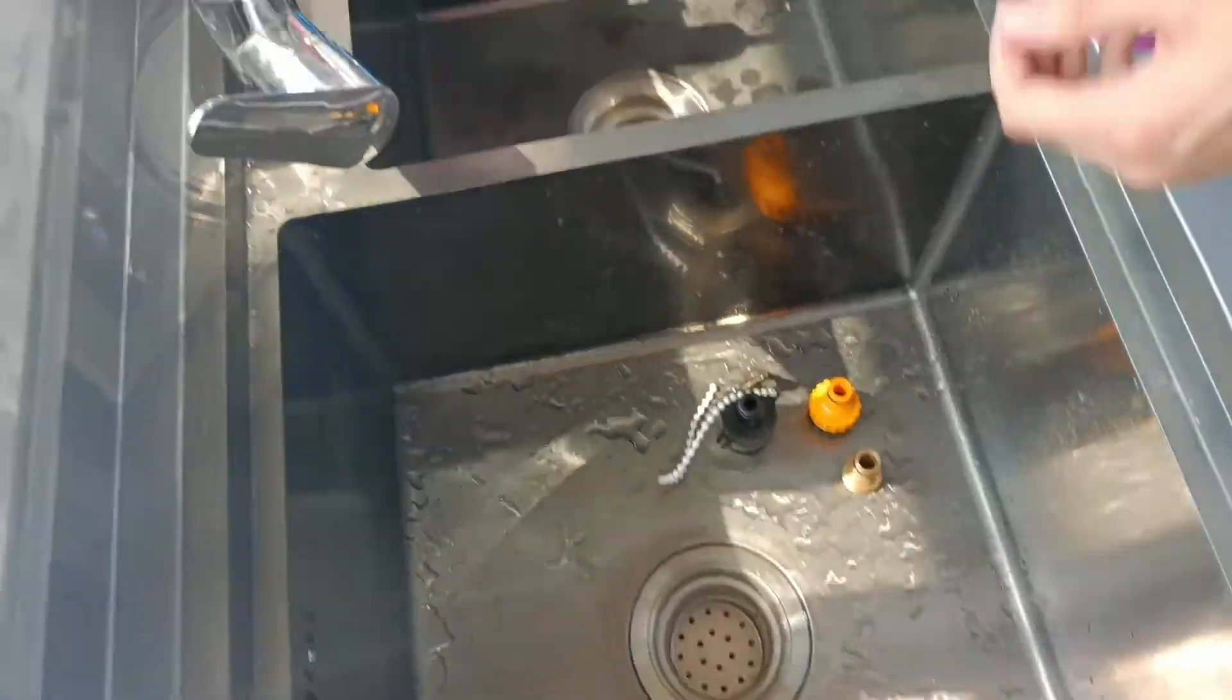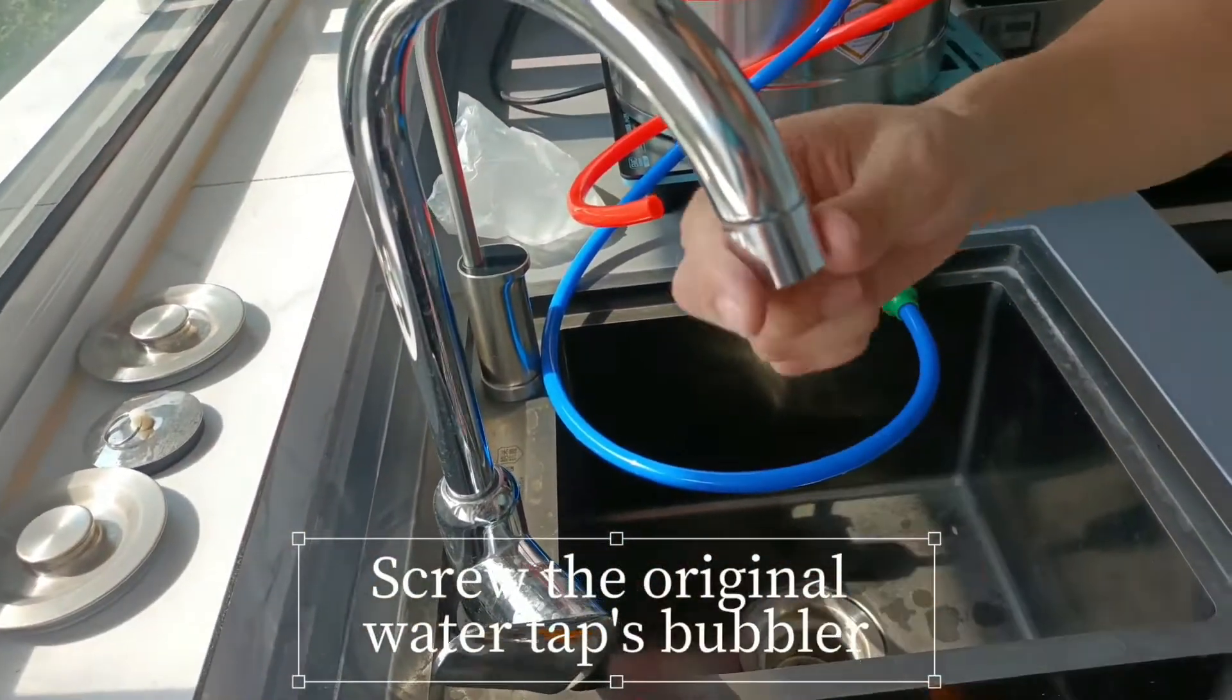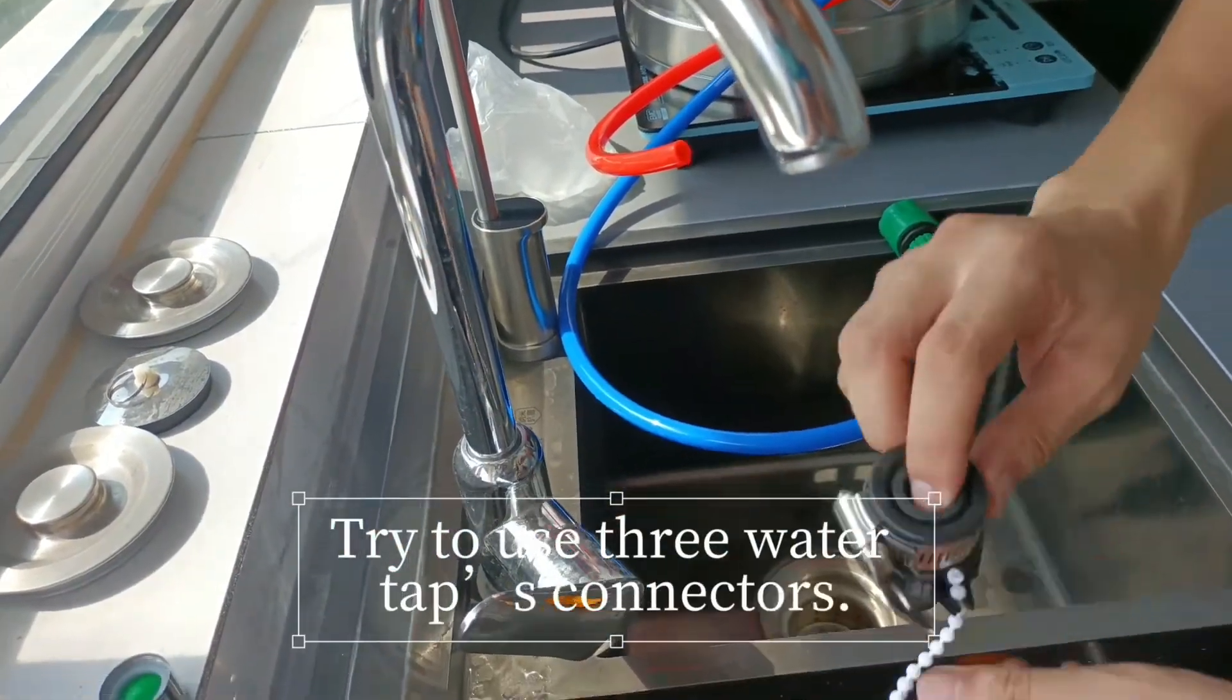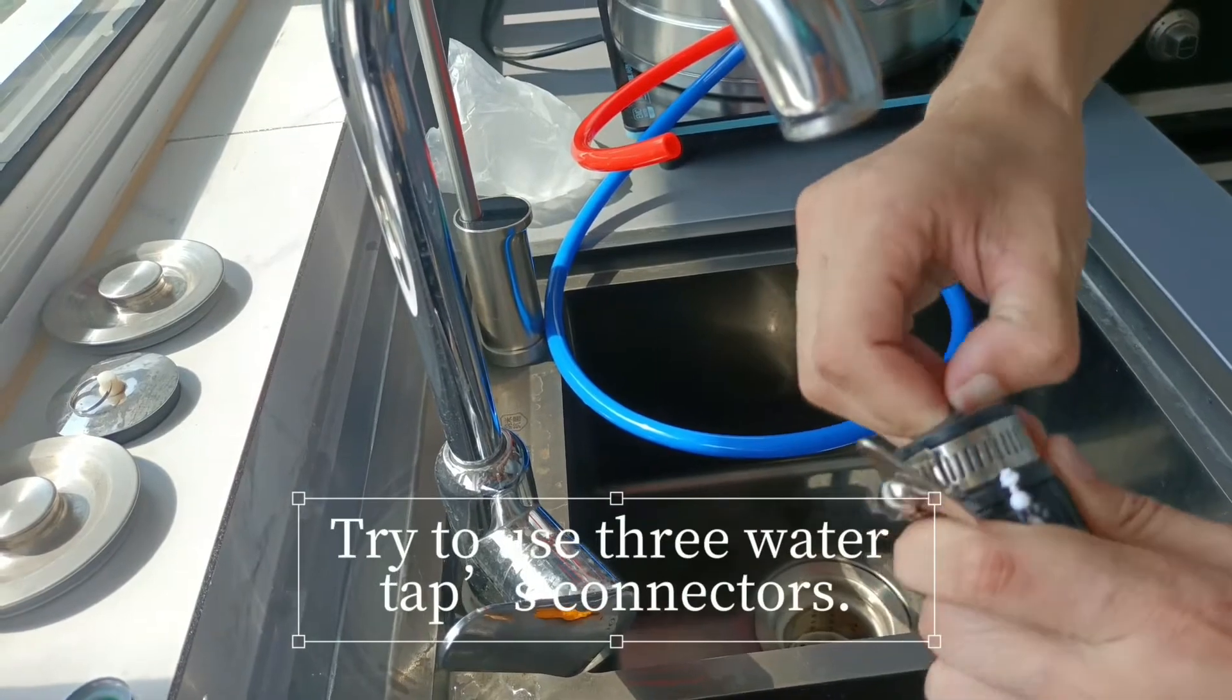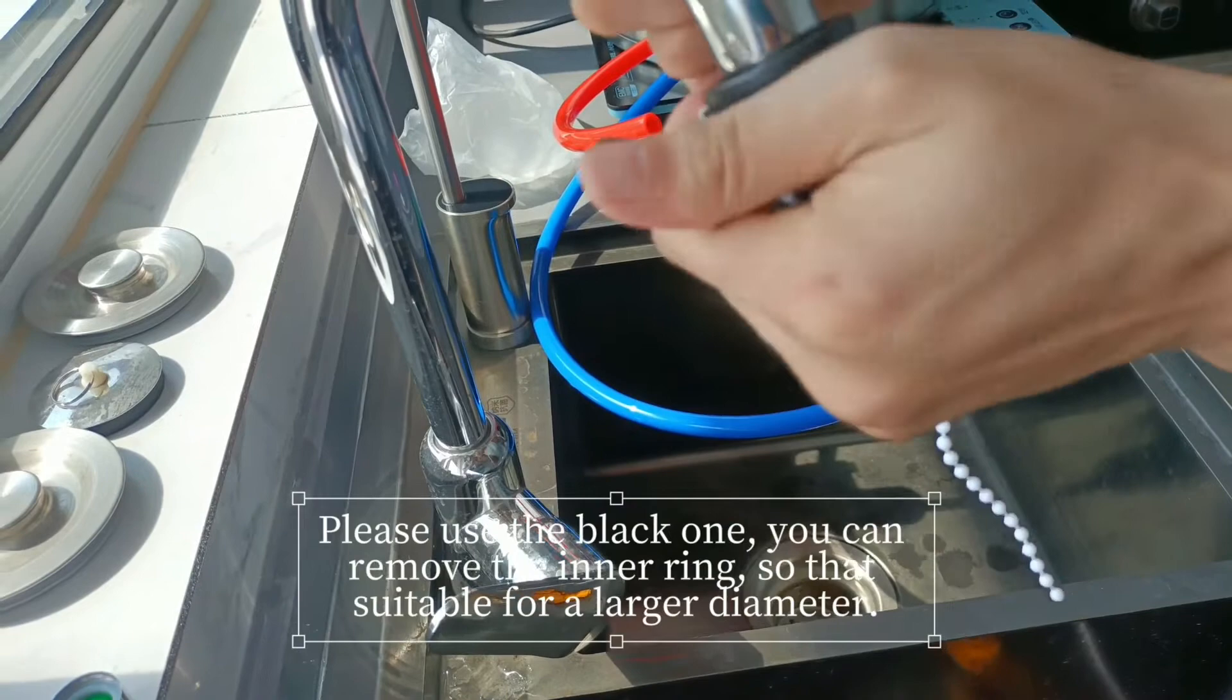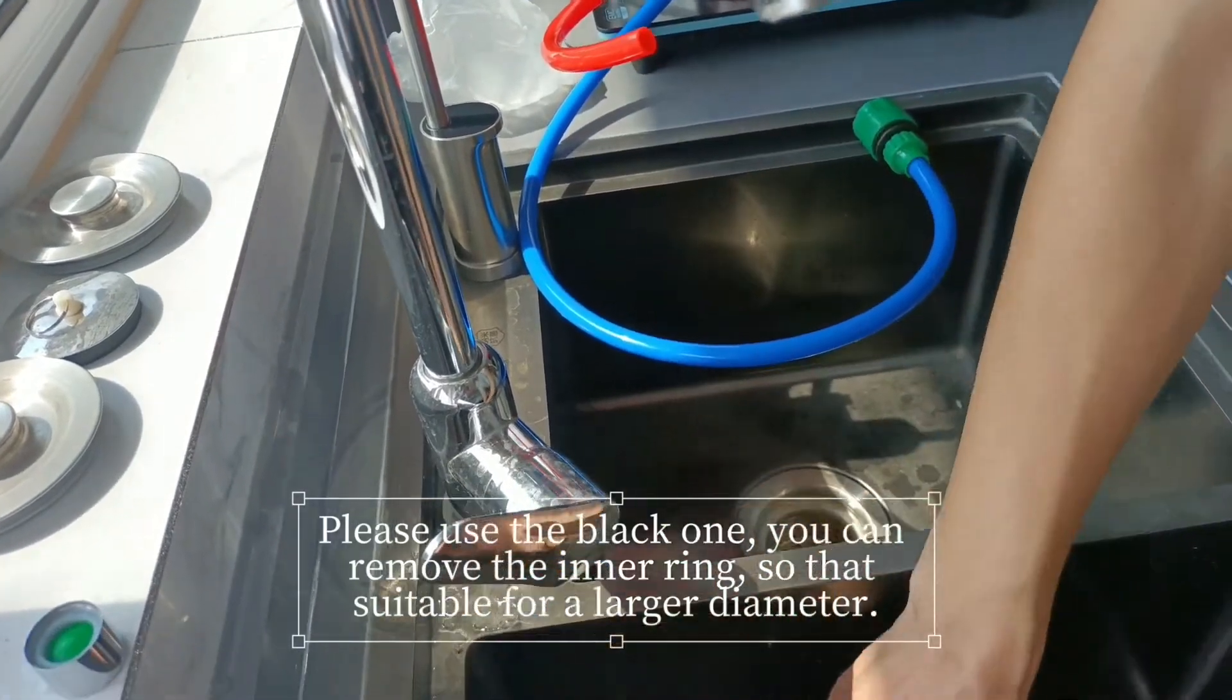Cooling pipeline, cool the original water tap bubbles. Why do you use grey water tap connectors? Please use the black one. You can remove the inner ring, so that suitable for a larger diameter.